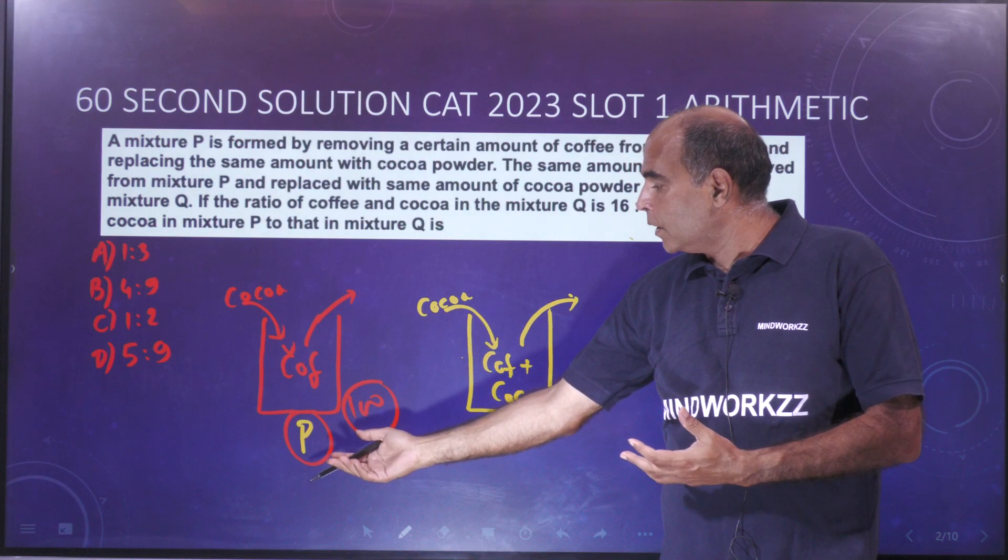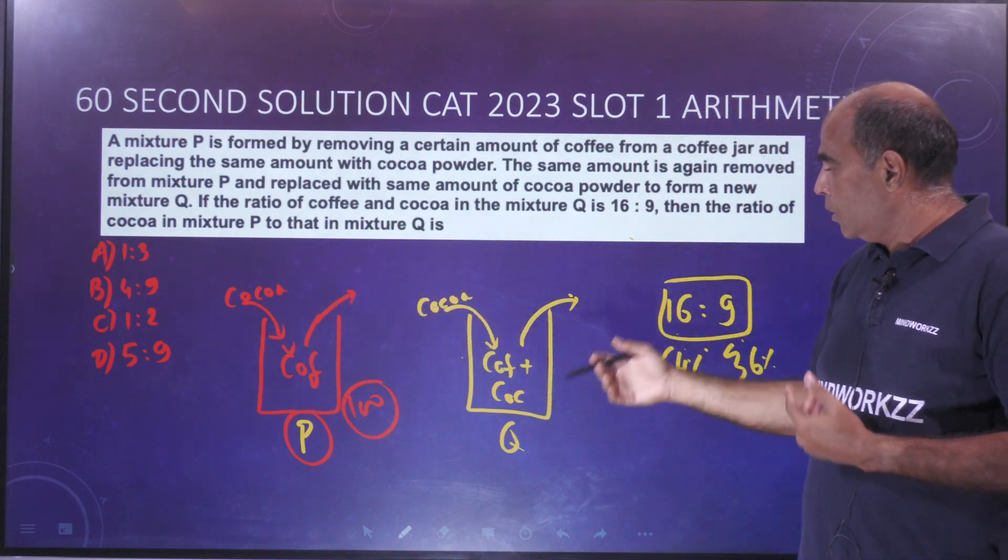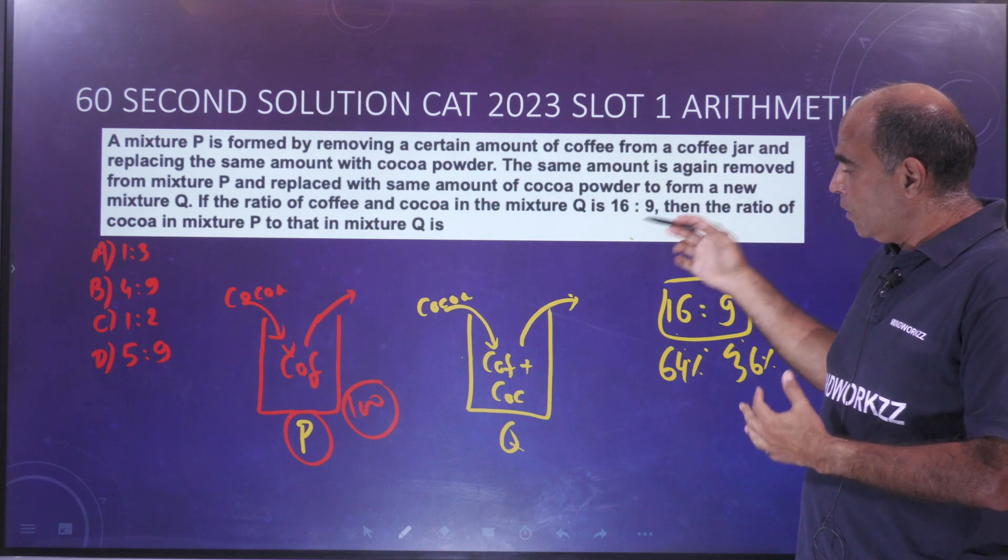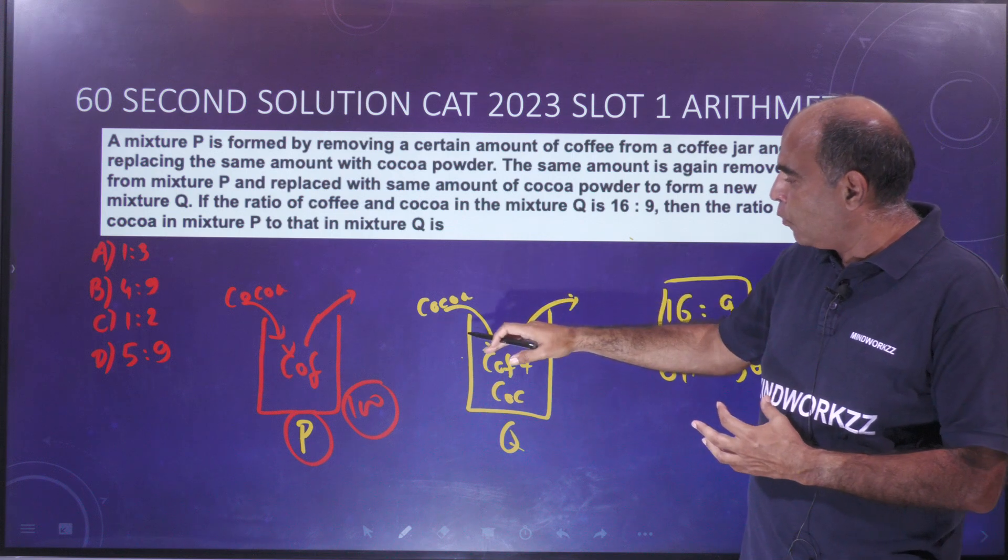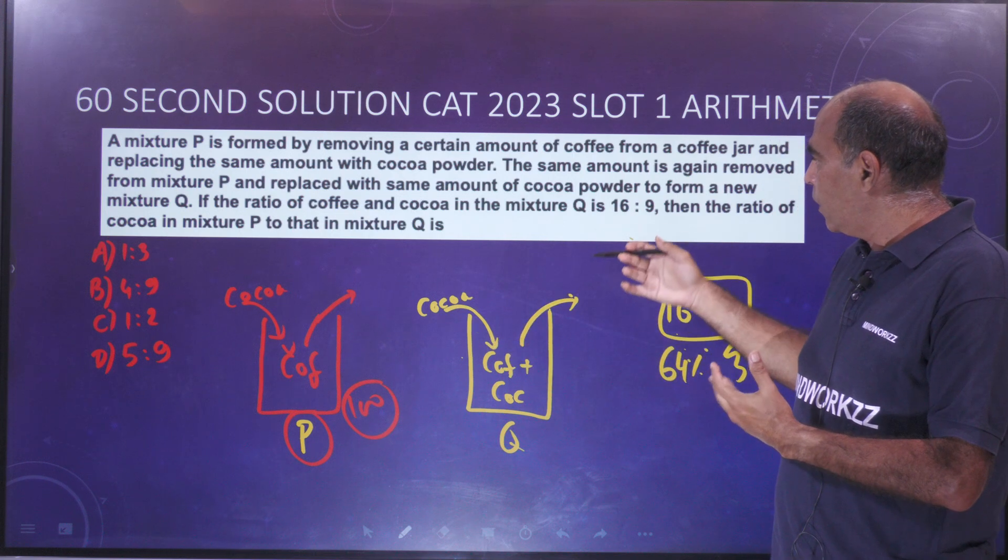This is the picture you form - mixture P where you don't know how much you're taking out. Then the same thing is done again from the mixture coffee plus cocoa that you formed in mixture P. You took out the same amount, put back cocoa, and now you have a mixture.